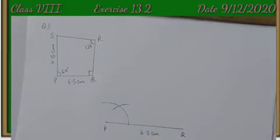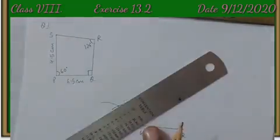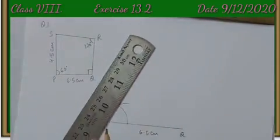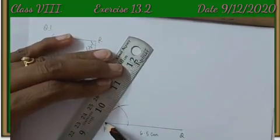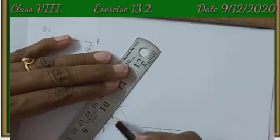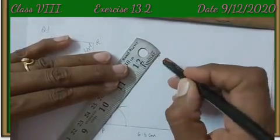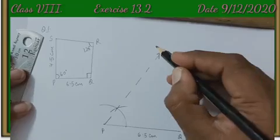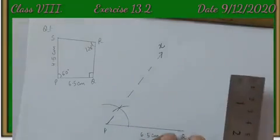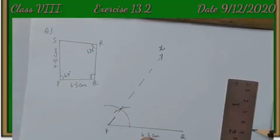Now, the intersecting point of both the arcs is the point where we will join the center P for constructing 60 degree. We will construct this ray with dotted line because we don't know what will be the required line segment for PS.